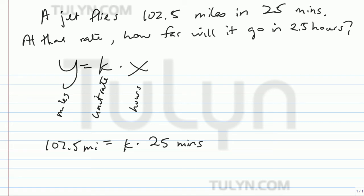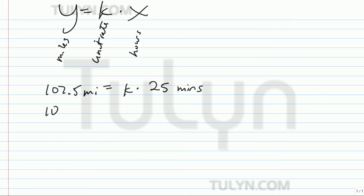Oh, but they want it in 2.5 hours. So let's go ahead and convert these minutes into hours. 102.5 miles equals k times 25 minutes is how much of an hour. Let's go ahead and reduce. See how much of an hour this is. Divide by 5, divide by 5, 5, 6. It's 5 sixths of an hour.